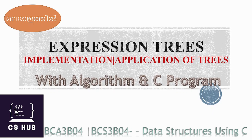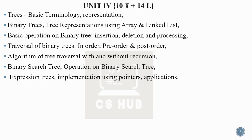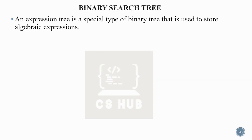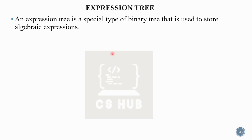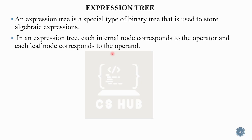What is an expression tree? We already have the types of trees; the expression tree is one of them. For example, A plus B, or A plus B into C star D. Each internal node corresponds to an operator.